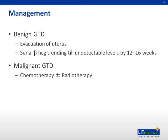In the management of benign gestational trophoblastic disease, evacuation of the uterus with serial trending of beta-HCG until undetectable levels by 12 to 16 weeks should be performed. If a malignant gestational trophoblastic disease is diagnosed, chemotherapy and sometimes radiotherapy may be indicated.